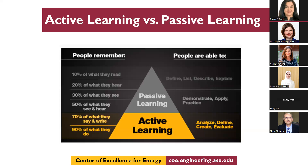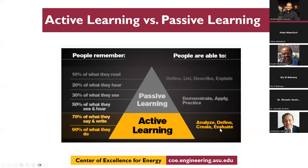In general, people remember 70% of what they say and write — a component of active learning — and 90% of what they do. This is why we really want to stay in the top part of Bloom's taxonomy — analyze, define, create, and evaluate — because this is more of our active learning space.